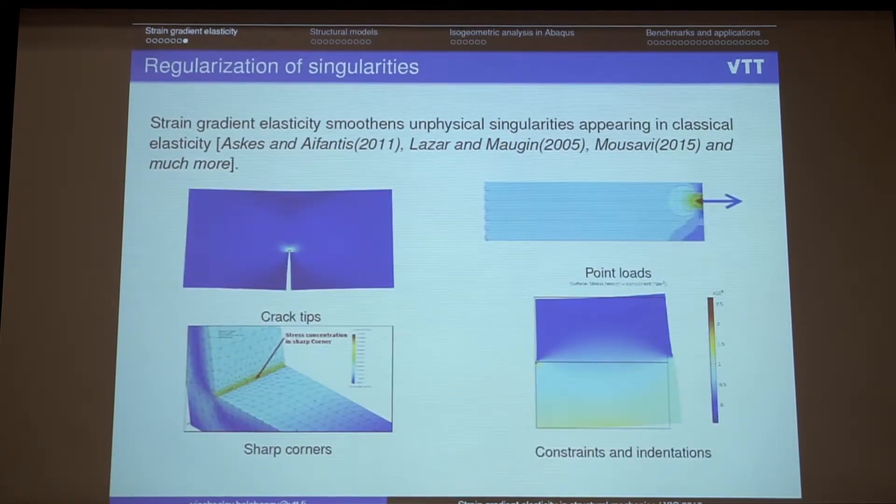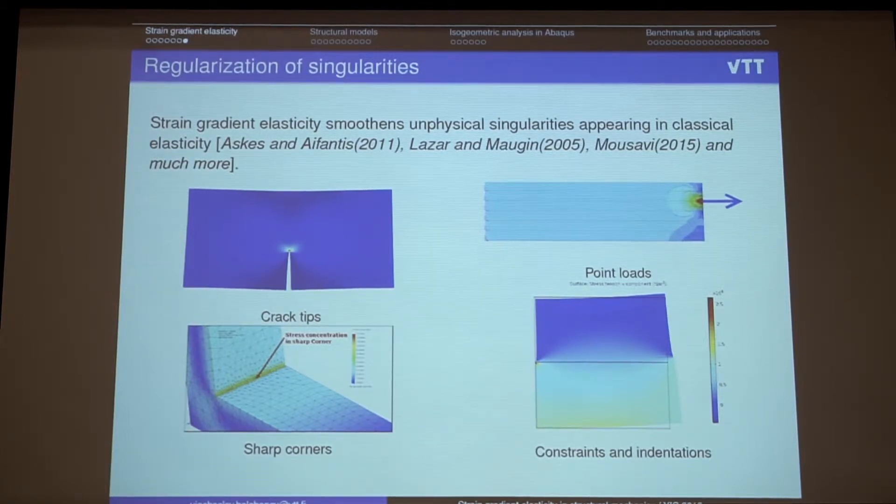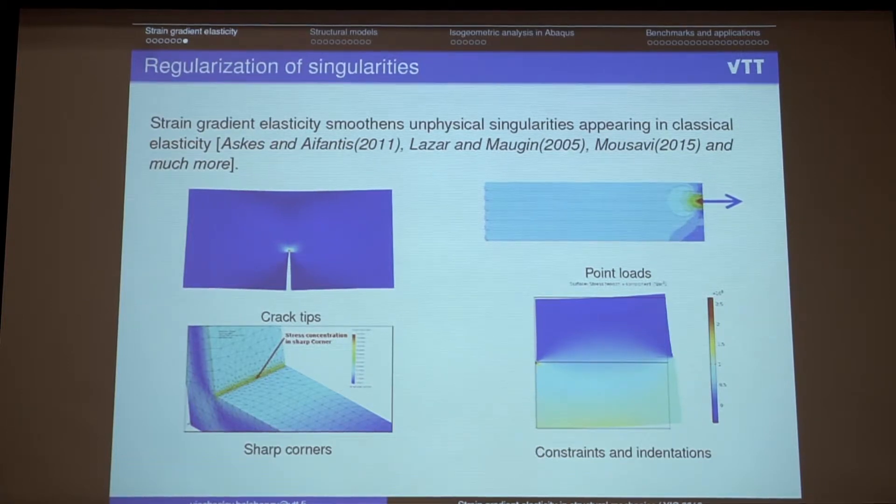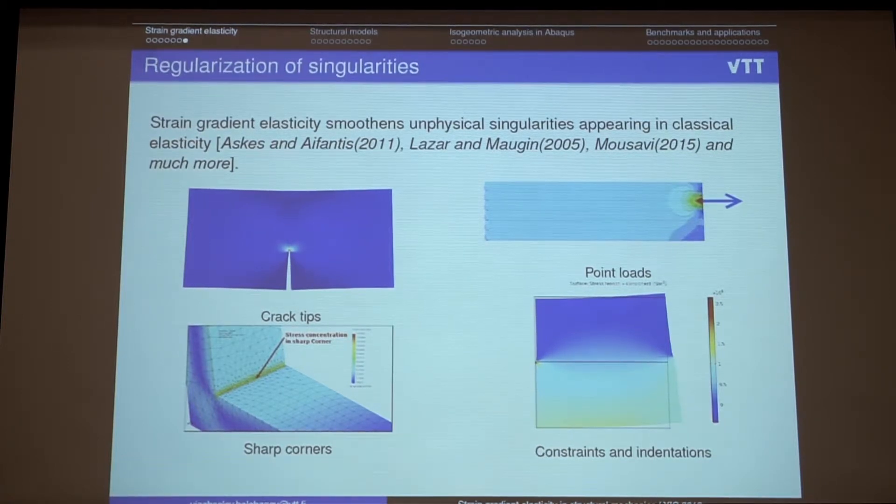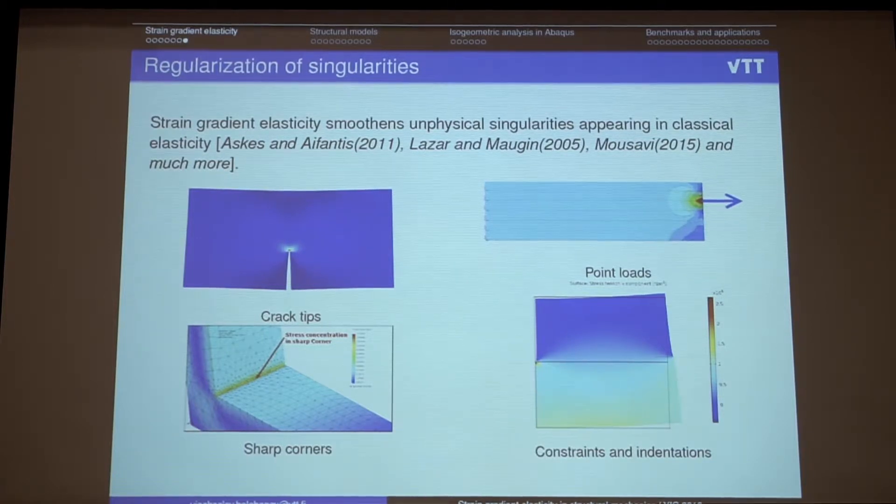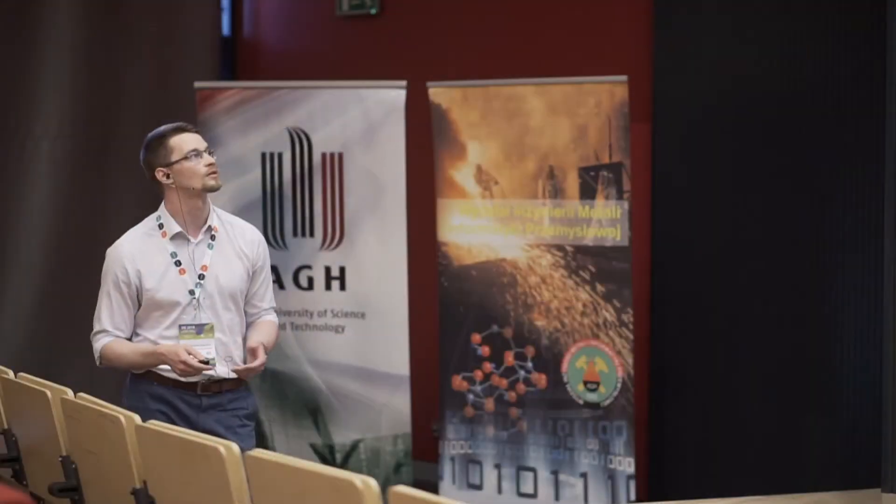And the last, maybe the last advantage of using such theories was reported by many scientists who usually work with damage mechanics. So the fact that strain gradient elasticity helps to smooth the unphysical singularities appearing in some crack tips or sharp corners or in point loads and so on.